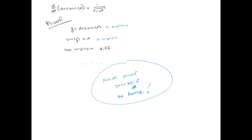After you use implicit differentiation, you're going to have to use a trig identity, and at the final answer, you're going to get 1 over the square root of 1 minus x squared. Try it at home by yourself.